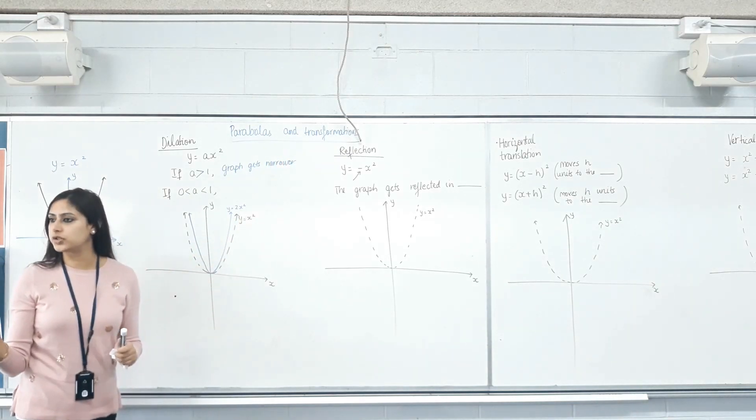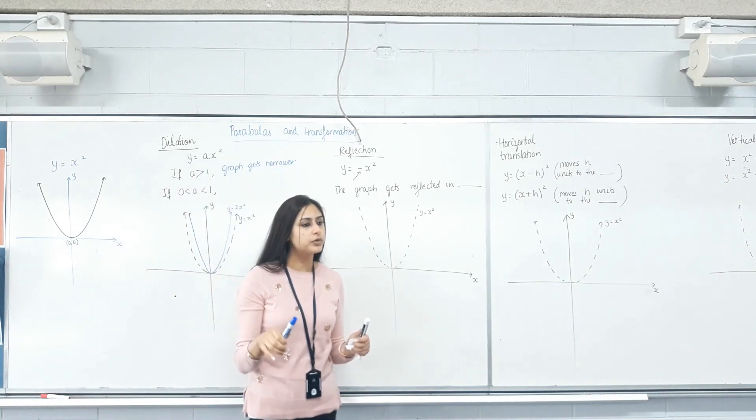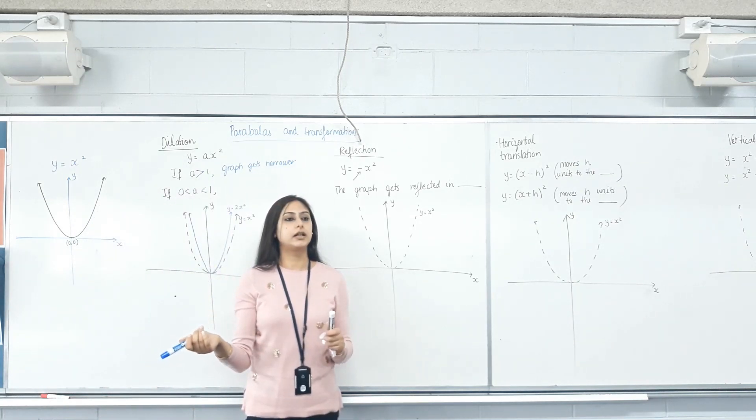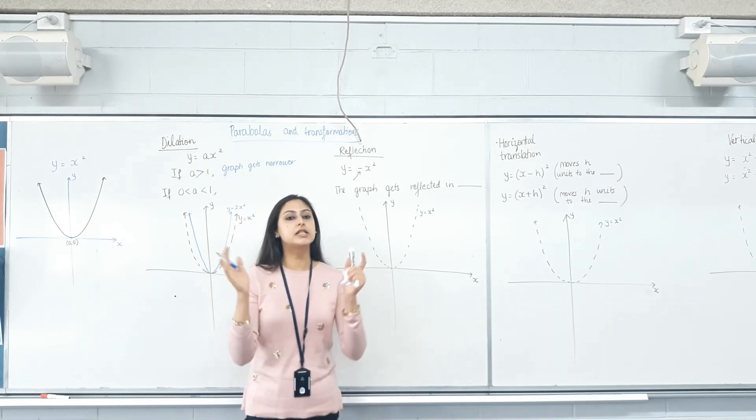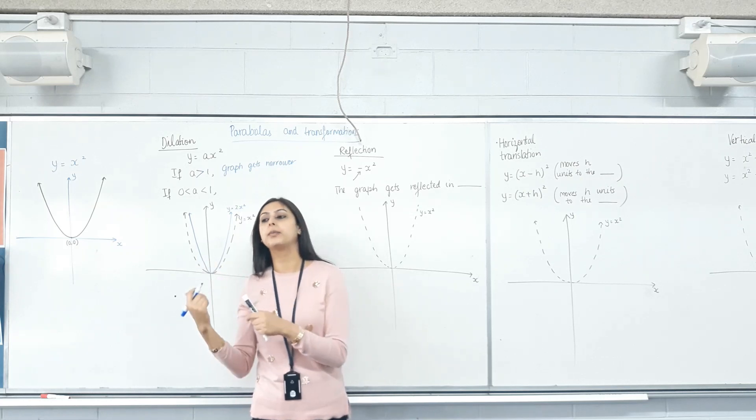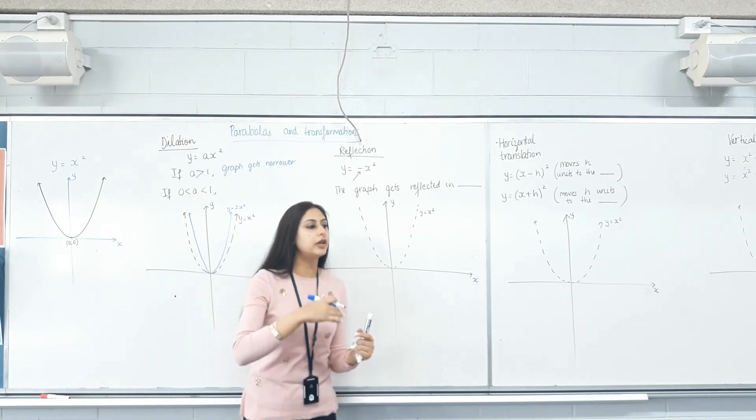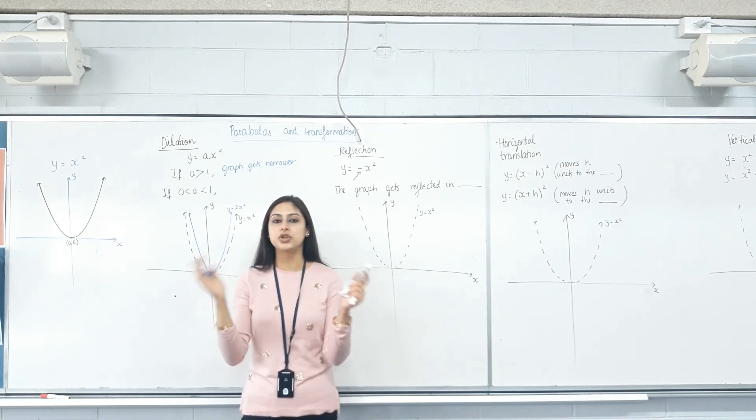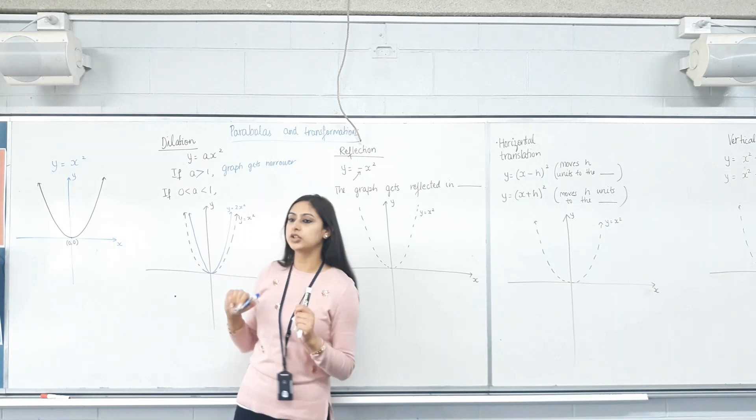Did the turning point change? What was the turning point of both y equals 2x squared and y equals 3x squared? Zero. Exactly. So this is called dilation. When the graph just gets narrower or wider, we'll see how it will be wider. But nothing else. It hasn't shifted left or right or up or down. It has just stretched itself or compressed itself. So this is called dilation.